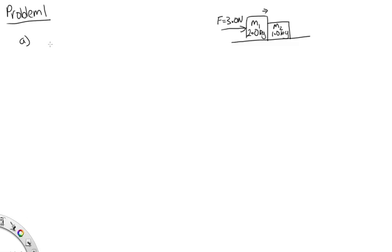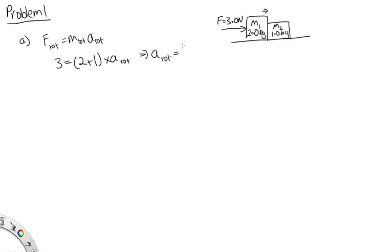One way to do this is to work out the acceleration of the system. F total equals m total times a total. The two blocks are accelerating at the same rate as they're touching each other. So 3 equals (2 + 1) times A total, which tells us A total equals 1. Since block m2 is accelerating at 1 m/s² and has mass 1 kg, the force on block m2 is 1.0 × 1.0 = 1.0 newtons.